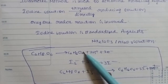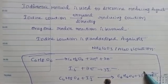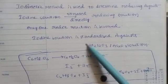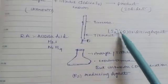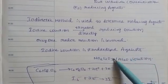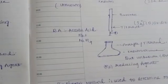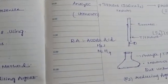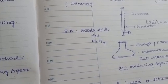Main points: Iodimetric is used to determine reducing agent. Iodine solution is titrated directly with reducing solution. Only one redox reaction is involved. Iodine solution is standardized against Na2S2O3 (sodium thiosulphate) solution. This is the complete information.